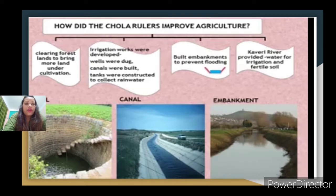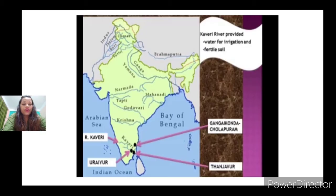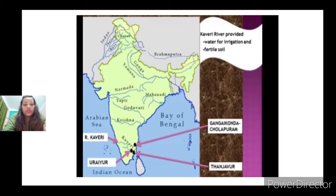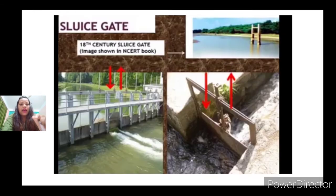The Kaveri river provided water for irrigation and fertile soil. I have shown this on a map — the Kaveri river area. There are many tributaries before the river falls into the Bay of Bengal, which flow through Thanjavur and Uraiyur. Because of these tributaries, fertile soil is concentrated in those areas, making it a good element for agriculture. The Kaveri river helped a lot in the irrigation process as well as providing fertile soil for cultivation.